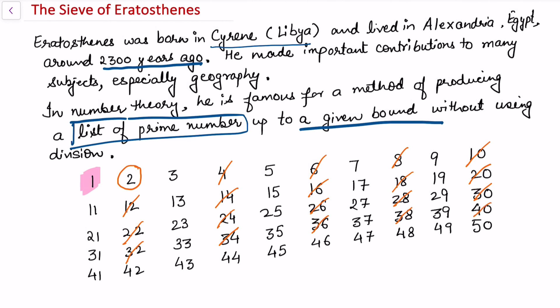Now look up the next integer which is not crossed off, that is 3. So circle 3 and now cross off all the multiples of 3. In this case we are going to cross 9, 15, 21, 27, 33, 39, 45.